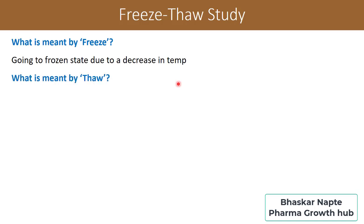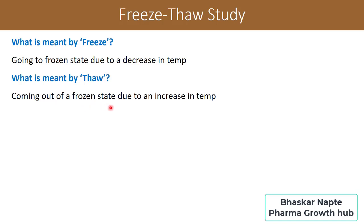Now let us understand the meaning of thaw. Coming out of a frozen state due to an increase in temperature is called thawing. In our example, once we reach the ice state, the moment you increase the temperature of the ice, the ice converts back into water — it is coming out of its frozen state. So thawing happens because of the increase in temperature, and freezing happens because of the decrease in temperature.